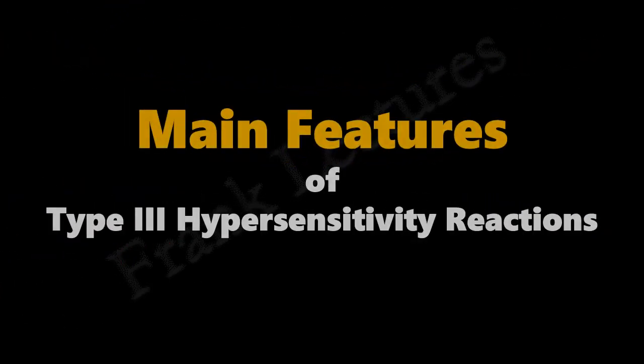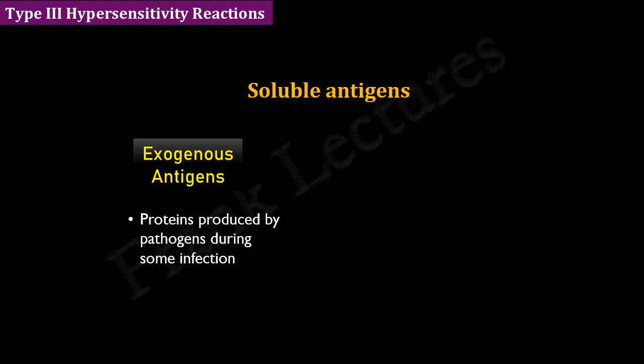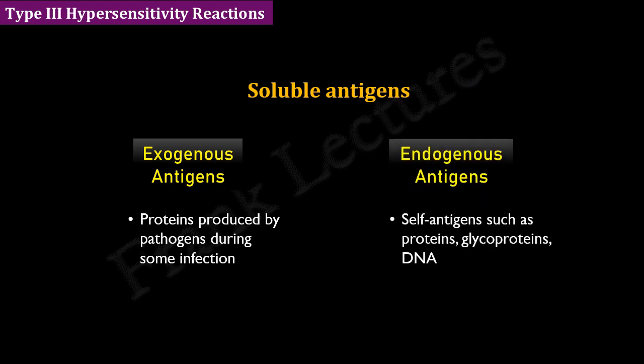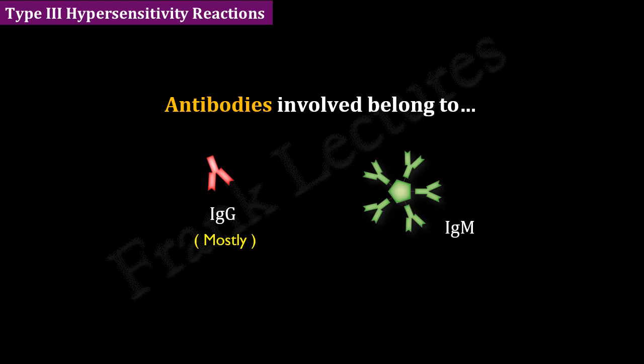Let's talk about some main features of type 3 hypersensitivity reactions. The antigens involved are soluble, and antibodies are directed against these antigens circulating in the serum. The antigens responsible can be exogenous — for example, proteins produced by pathogens during some infection — or endogenous, such as self-antigens like proteins, glycoproteins, and even DNA. The antibodies involved mostly belong to the IgG class, but IgM can also be involved. These antibodies can be specific to foreign antigens or self-antigens.